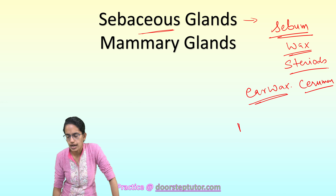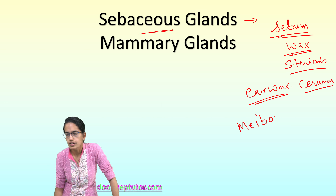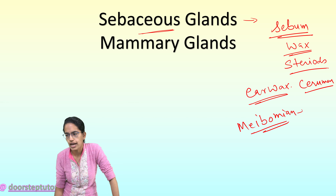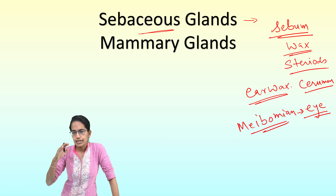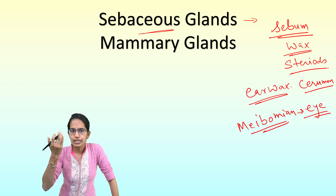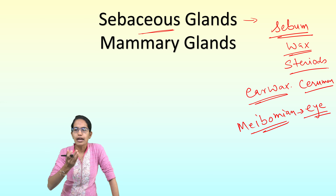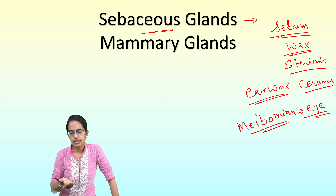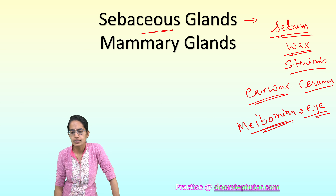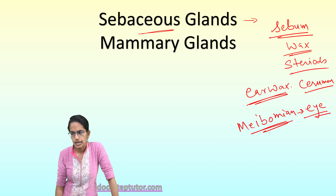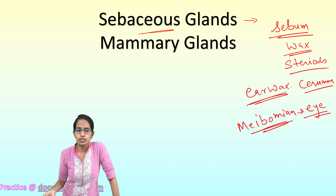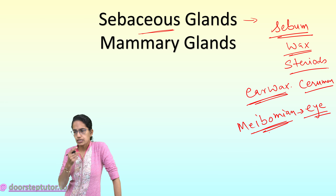The next important gland is the meibomian gland, which lubricates the eyes and helps prevent outflow of tears. So meibomian glands are in the eyes and ceruminous glands are in the ears. Some modifications and disorders associated with sebaceous glands include: inflammation of the sebaceous glands leading to acne.